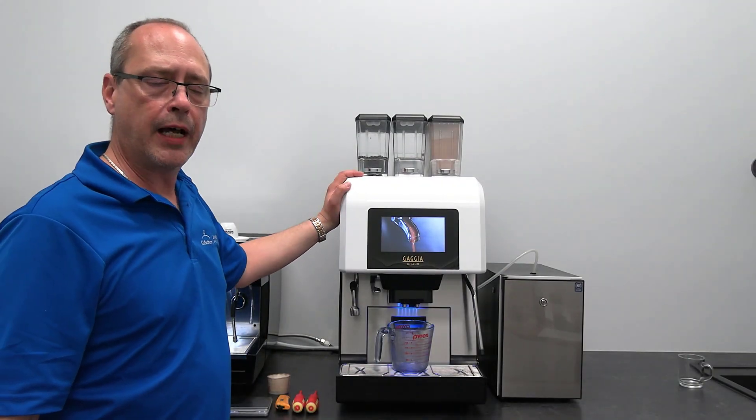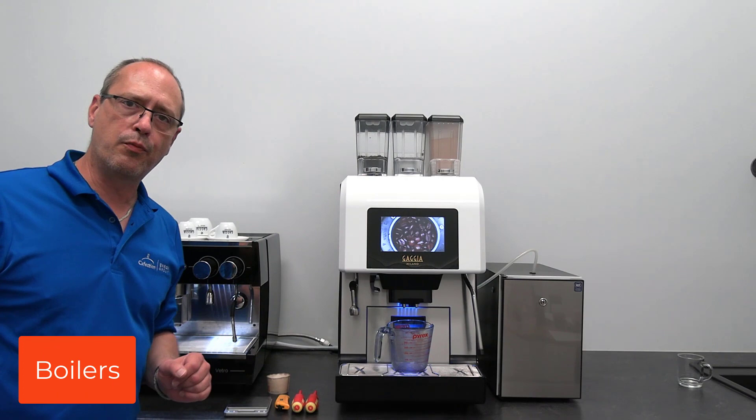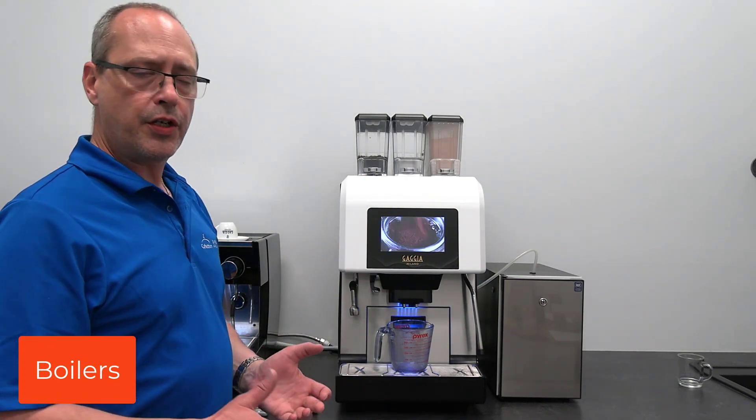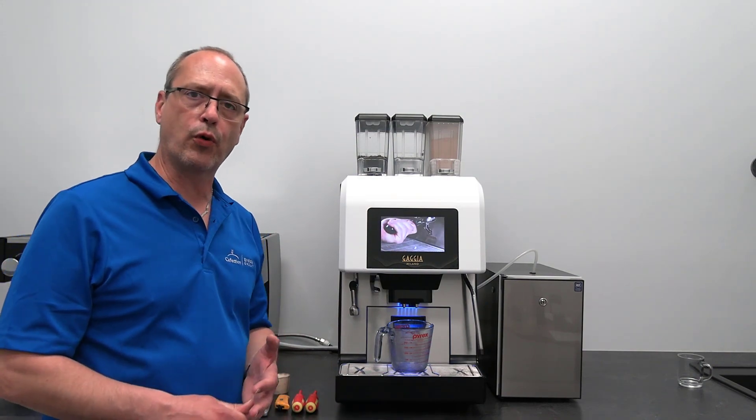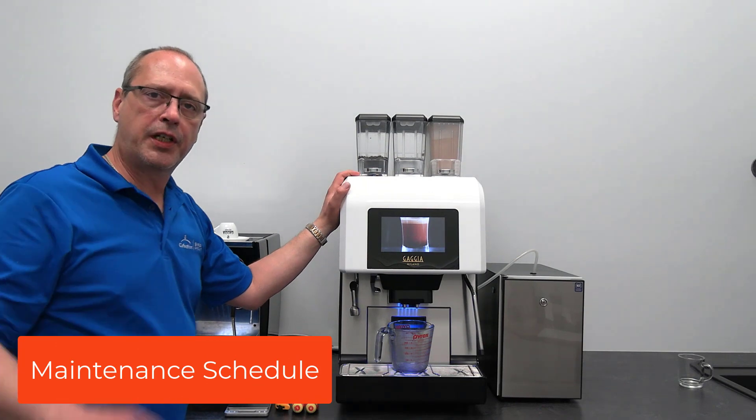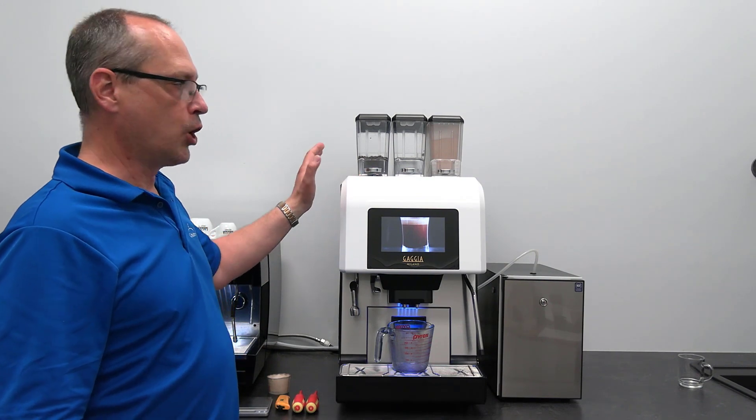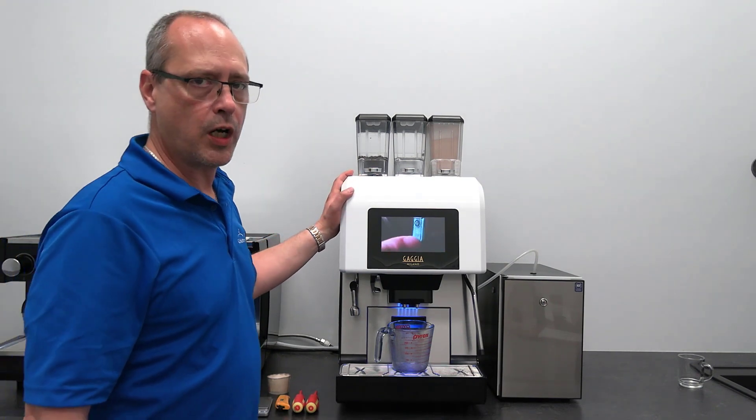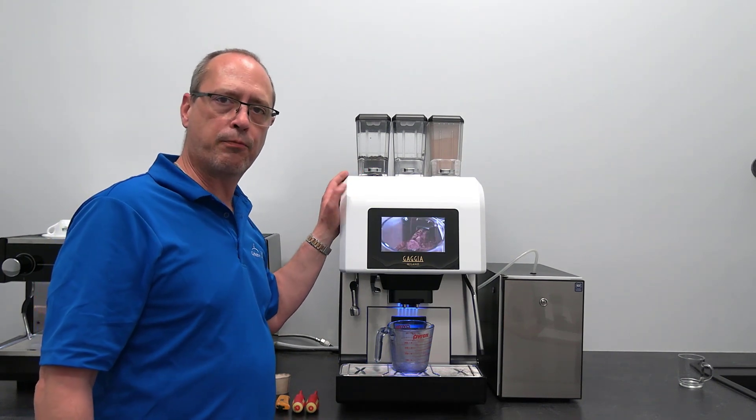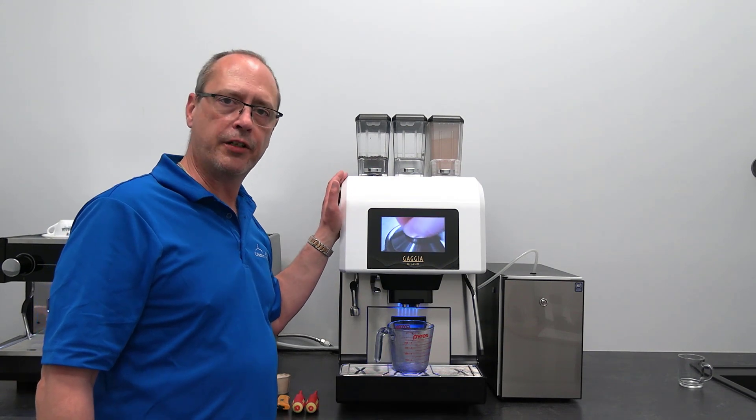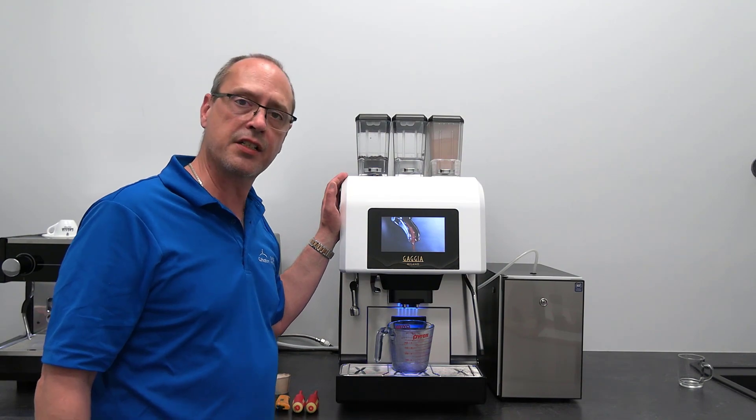This will impact the way the machine works and dispenses your products. Inside the machine, you've got two boilers to the system: the coffee boiler and the steam hot water boiler. Make sure to keep your maintenance schedule up to date. This will impact tremendously the way the machine works. Improper maintenance might affect the warranty and worst case scenario, it would void your warranty.